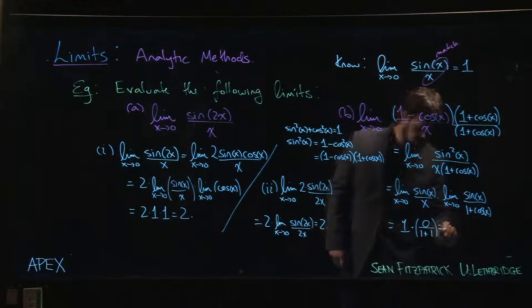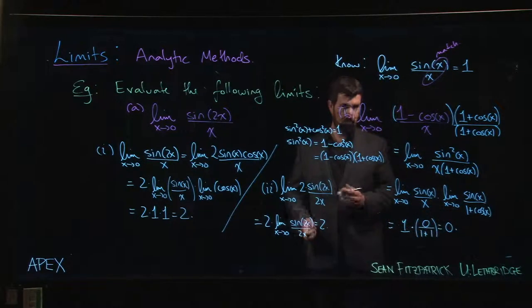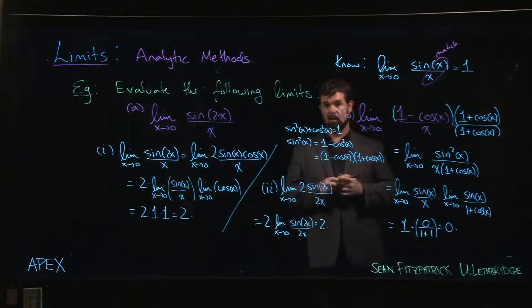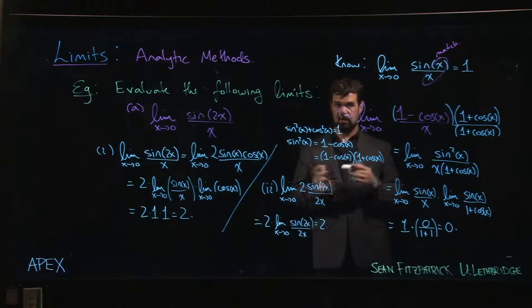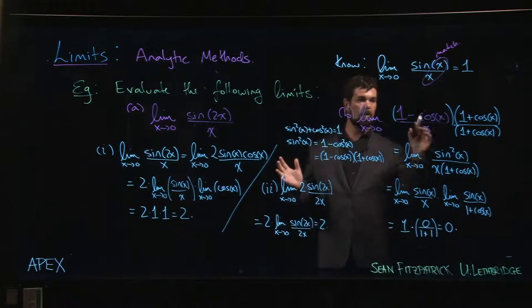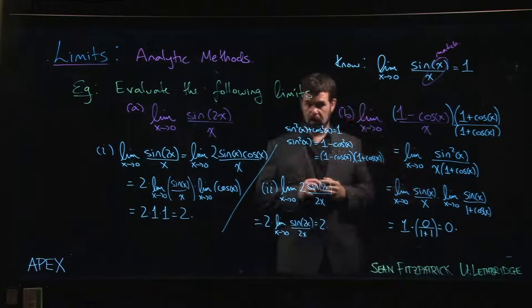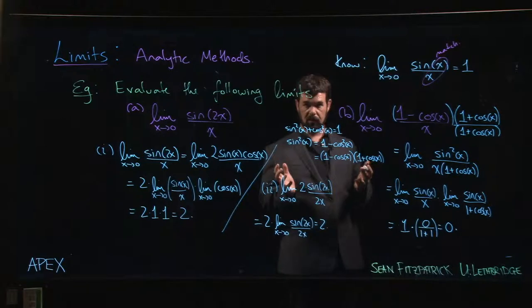1 times 0, still 0. So this one we had to be a little bit more clever in our manipulations to get to the answer. But nonetheless, we have it. This is also going to be an important limit moving forward when we look at derivatives of trig functions.